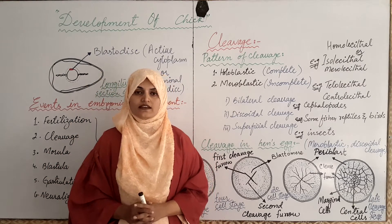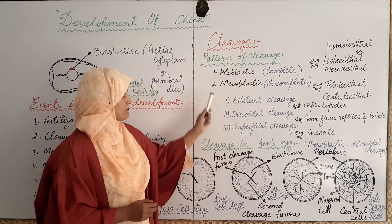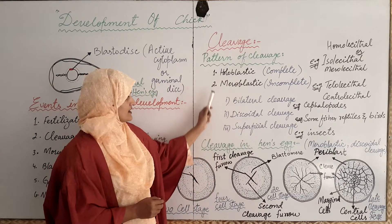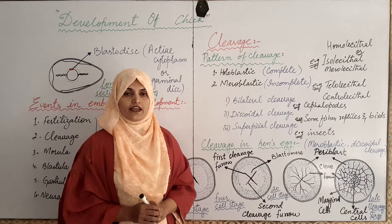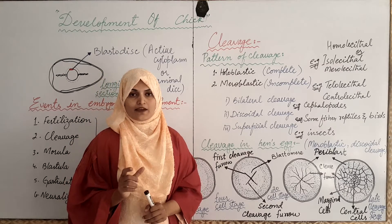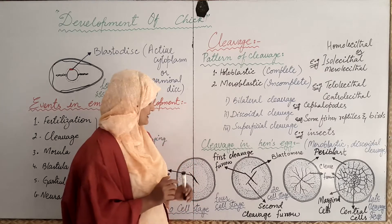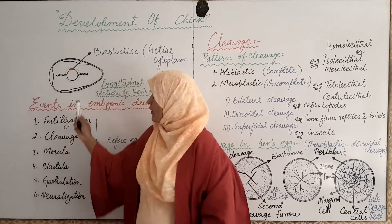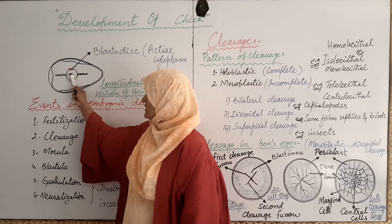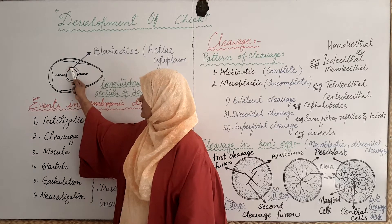In hen, the cleavage that takes place is meroblastic discoidal cleavage, in which cleavage takes place only in the blastodisk while the remaining portion of the egg remains as it is. Only the blastodisk undergoes cleavage.